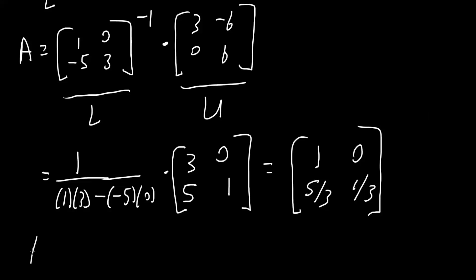Lastly, we just need to write down what we had. A is equal to LU. So, this is L: [1  5/3; 0  1/3], times U, which was [3  -6; 0  6].